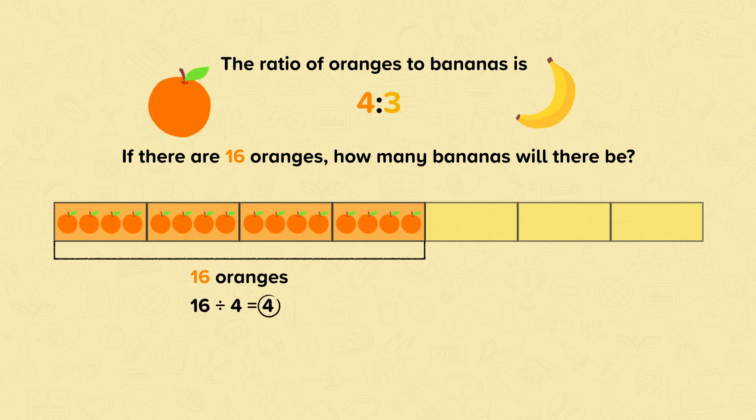In order to calculate the number of bananas, we know that there are three parts and four pieces of fruit in each part. 4 times 3 equals 12. There are 12 bananas.